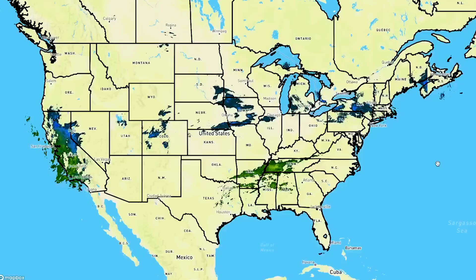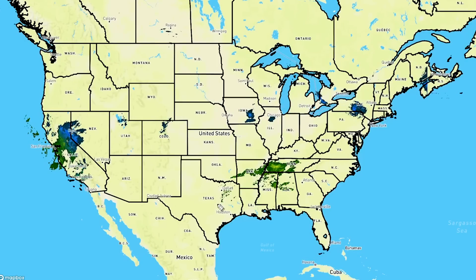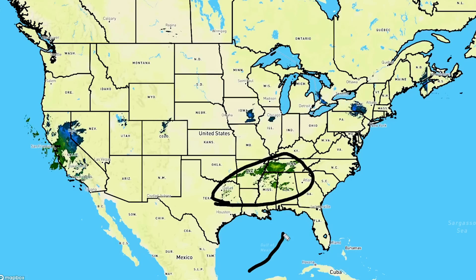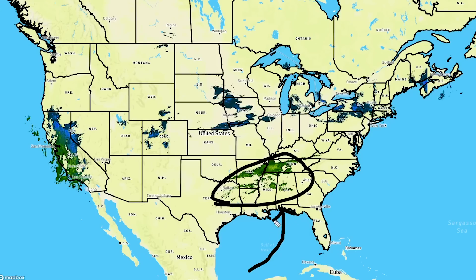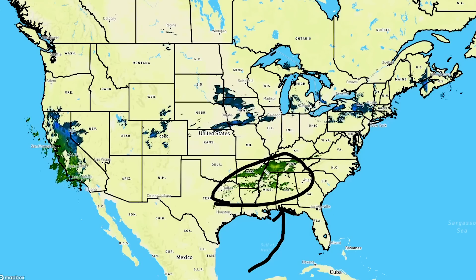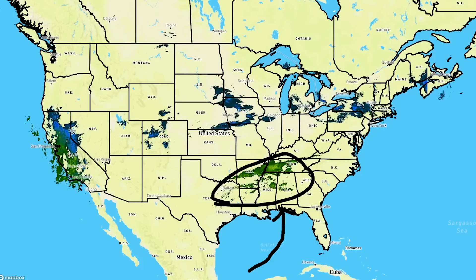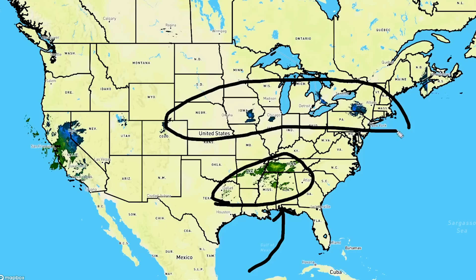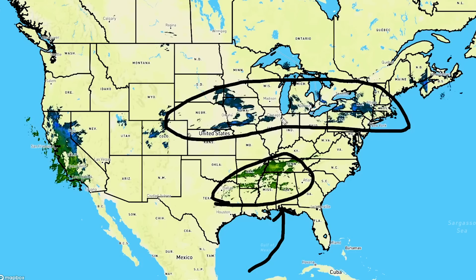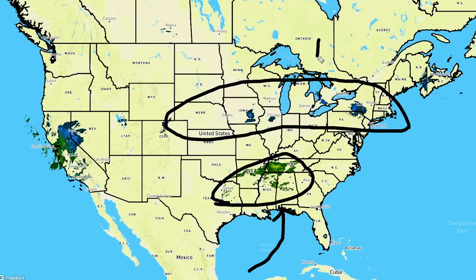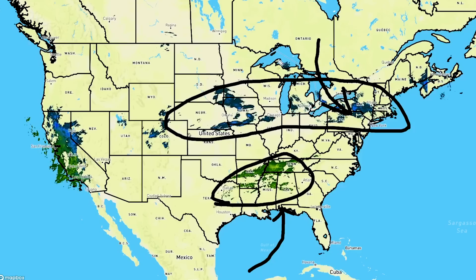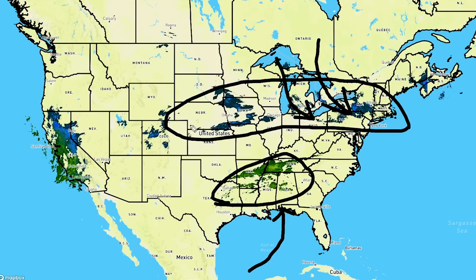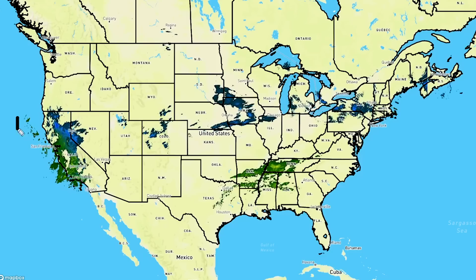Taking a look at current conditions, we have some storminess taking place across the gulf states into some of the interior eastern states with some showery and thunderstorm activity. Across the northeast, great lakes, and northern plains we also have snow showers — mostly in the form of lake effect snowfall for a lot of these folks, as the cold wind moving over has caused these to take place.